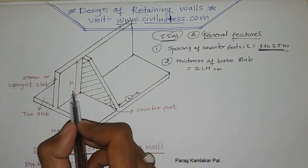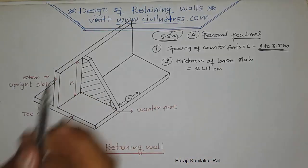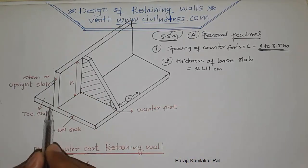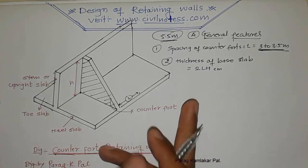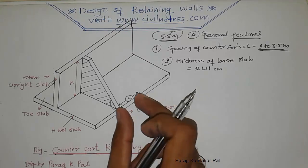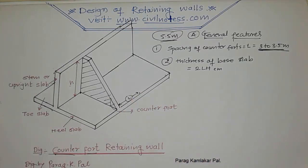H is the total height from the bottom of the base to the top of the wall. L is the spacing of the counterforts, and H is the overall height of the retaining wall in meters.